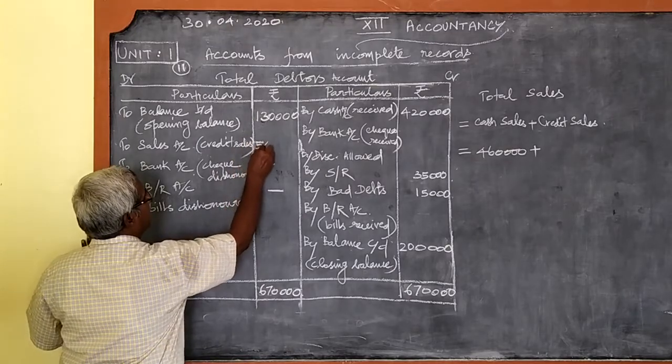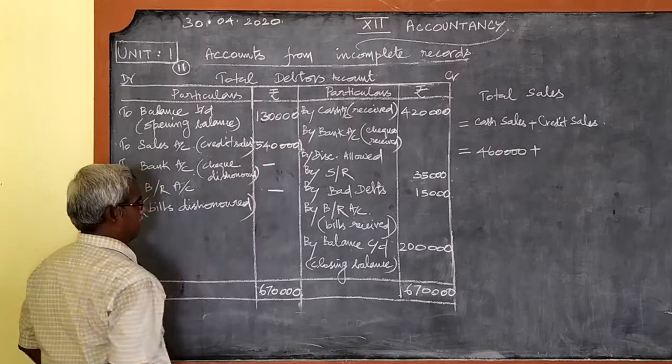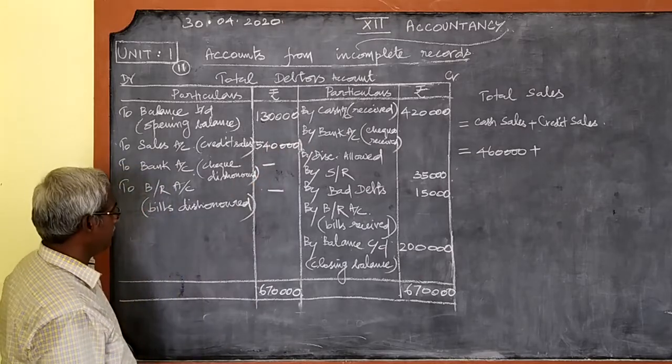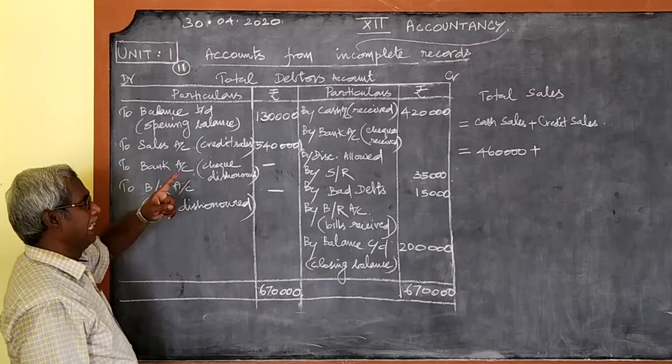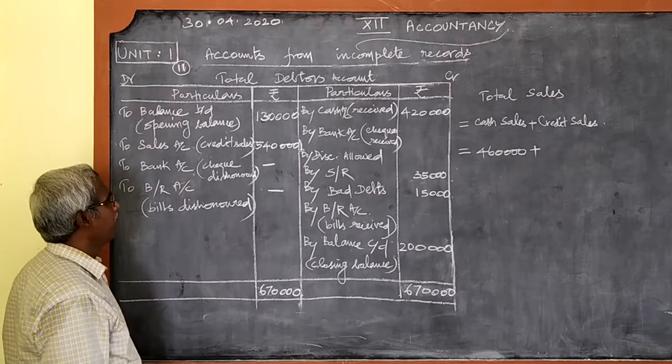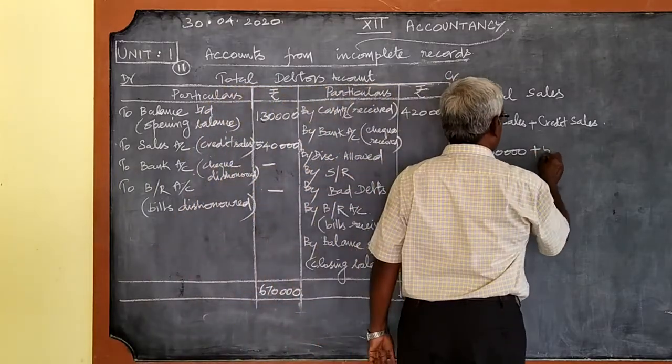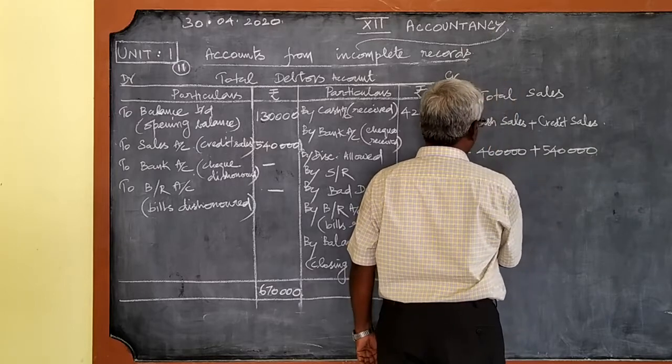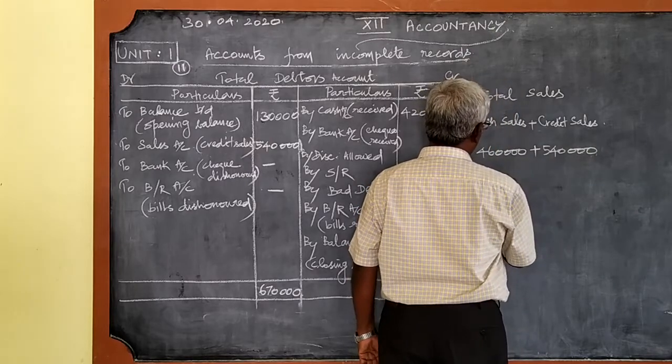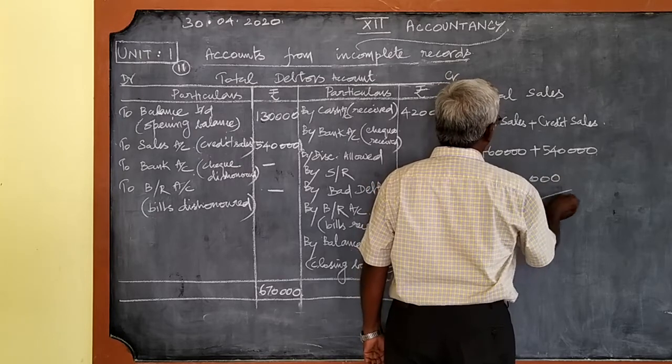This must be 5 lakhs 40,000. This is the credit sales. Already cash sales is given in the problem. Now we have found out the credit sales 5 lakhs 40,000, and if you find the total of these two you can find the total sales at 10 lakhs.